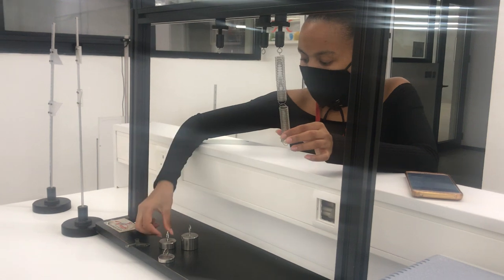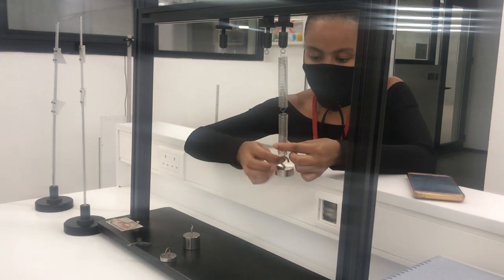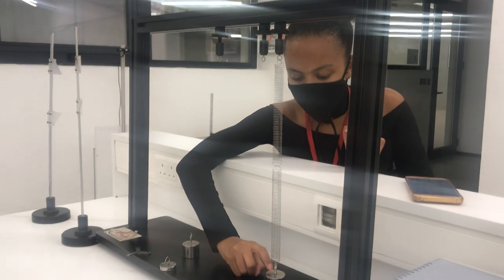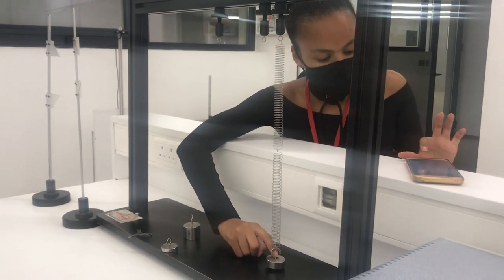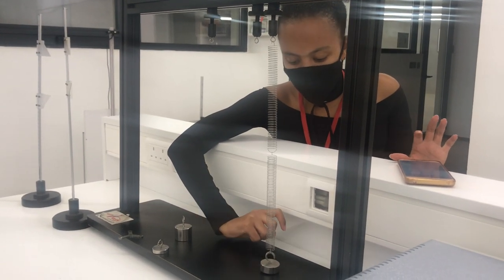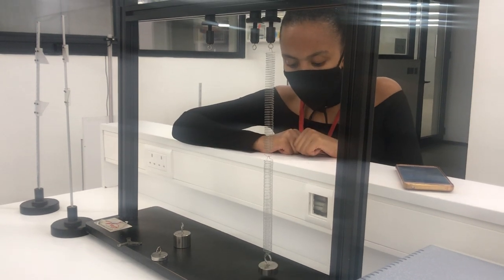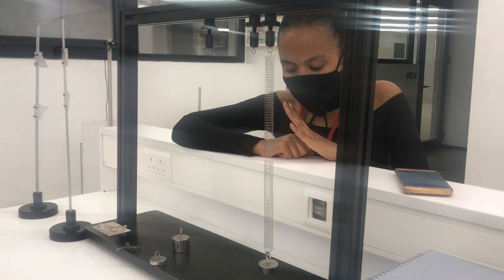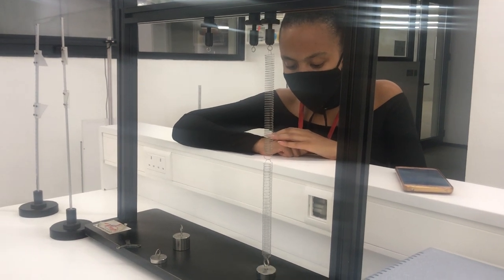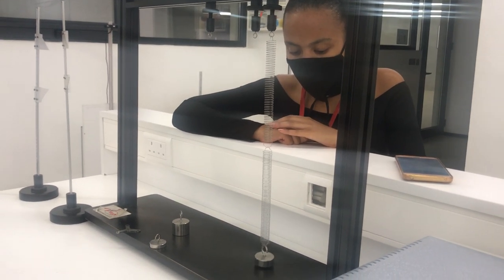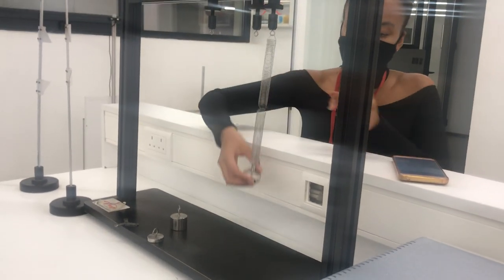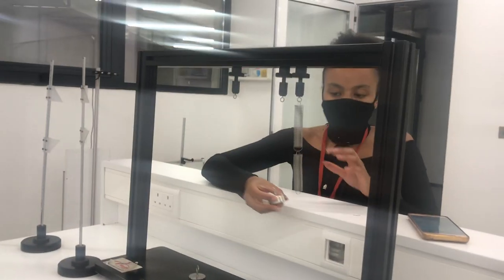Then, remove my 50 gram mass and attach my 100 gram mass, which is a little bit long. Gently pull it down. Start my timer. 1, 2, 3, 4, 5, 6, 7, 8, 9, 10, 11, 12, 13, 14, 15. And then I'll stop. Then my time will be recorded again.